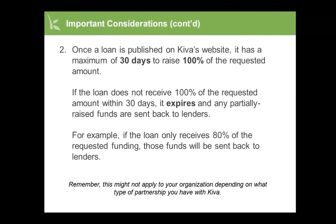Once a loan is published on Kiva's website, it has a maximum of 30 days to raise 100% of the requested amount. If the loan does not receive 100% of the requested amount within 30 days, it expires and any partially raised funds are sent back to lenders. For example, if the loan only receives 80% of the requested funding, those funds will be sent back to lenders.